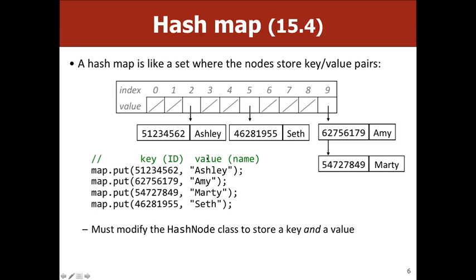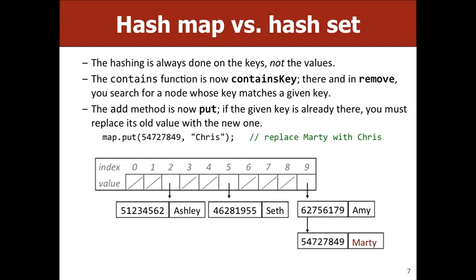The idea is that some function names change slightly: you still have contains but now it's containsKey; instead of add you'd have put; and get would return the value by searching the hash map for the key. One big difference is that when you put something in, you have to check if the key is already there — unlike a set where you just ignore duplicates, here you actually have to update the value. For example, if we put in a new value and change it to Chris, we replace the old value Marty.